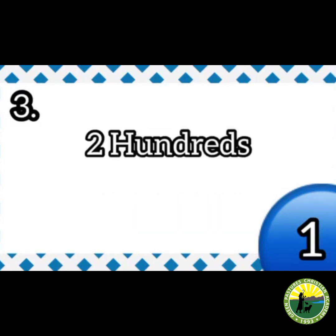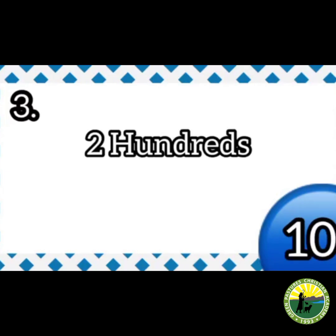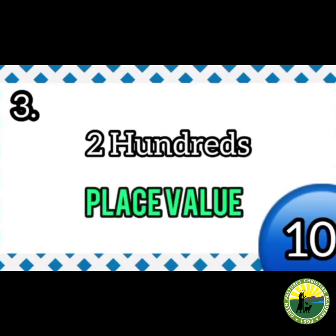Number 3: two hundreds. If your answer is place value, you are correct. Now you know place value and value.